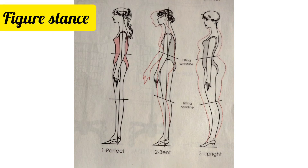The last figure variation is the figure stance. The first model has a perfect posture, the second model has a bent posture, while the last model has an upright posture. The outcome of your measurements and hence the final fitting of garments depends to a large extent on the figure variations of the body being measured.